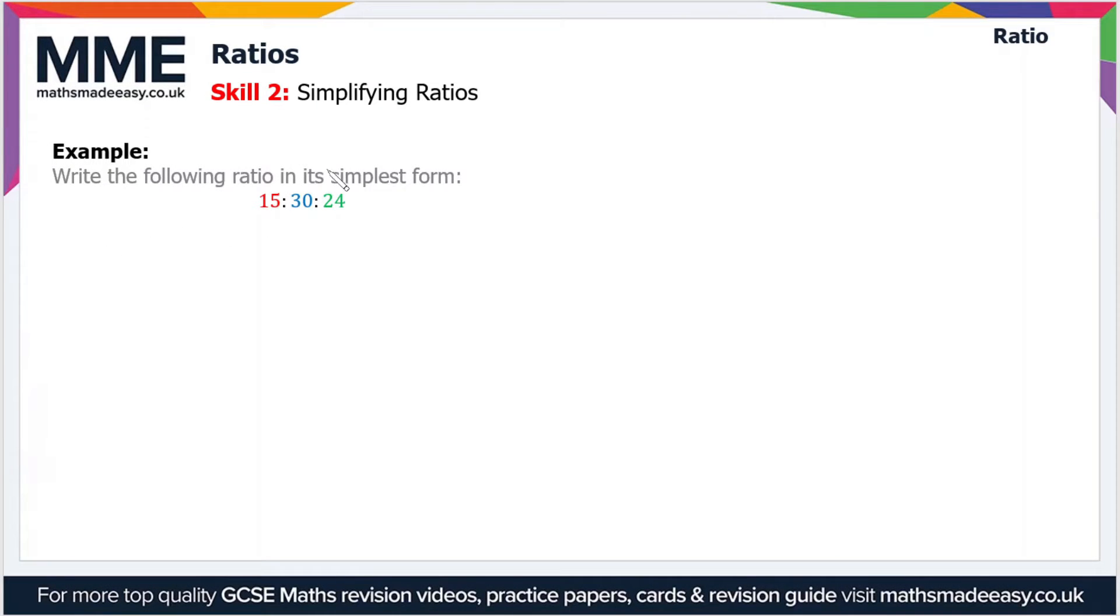Moving on, let's have a look at a second skill. This time we're looking at simplifying ratios. When we simplify a ratio, what we have to do is identify a common factor. In this example, write the following ratio in its simplest form: 15 to 30 to 24.